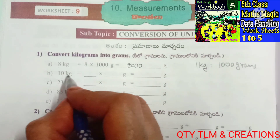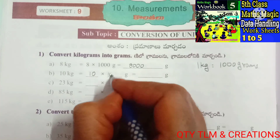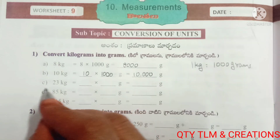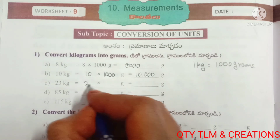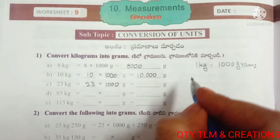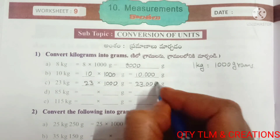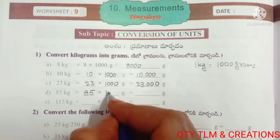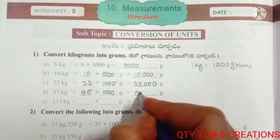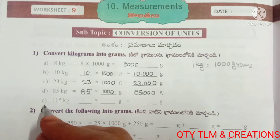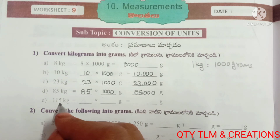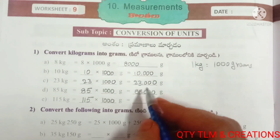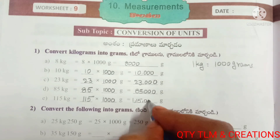(b) 10 kilograms equals 10 × 1000 grams, that equals 10,000 grams. (c) 23 kilograms equals 23 × 1000 grams, that equals 23,000 grams. (d) 85 kilograms equals 85 × 1000 grams, that equals 85,000 grams. (e) 115 kilograms equals 115 × 1000 grams, that equals 115,000 grams.